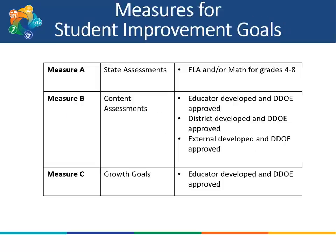These are the details of the measures that teachers can select. Measure A, State Assessments, are for ELA and/or math grades 4 through 8. Measure B are content assessments — educator-developed and department-approved, district-developed and department-approved, or externally-developed and department-approved. Measure C are growth goals, which are educator-developed and department-approved.